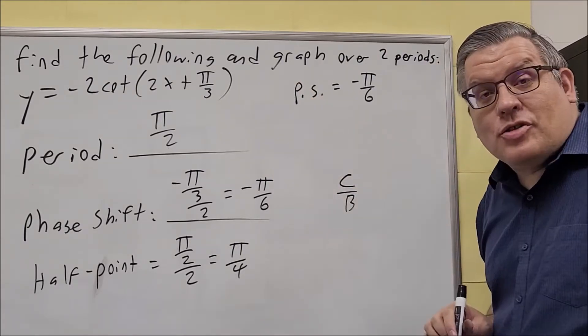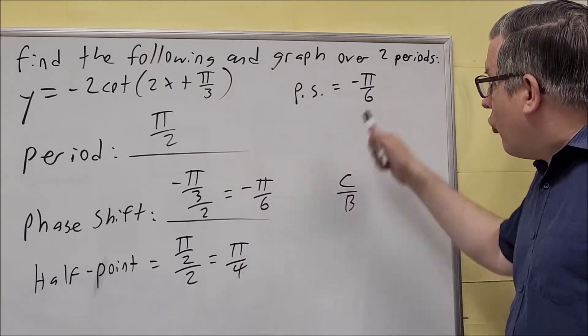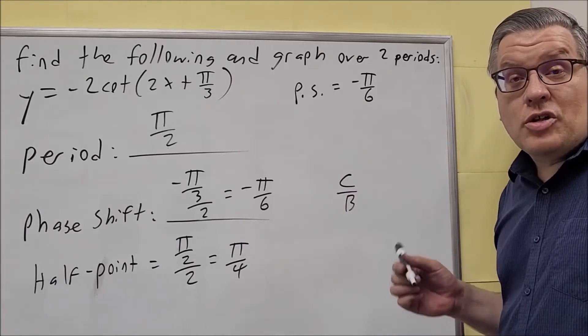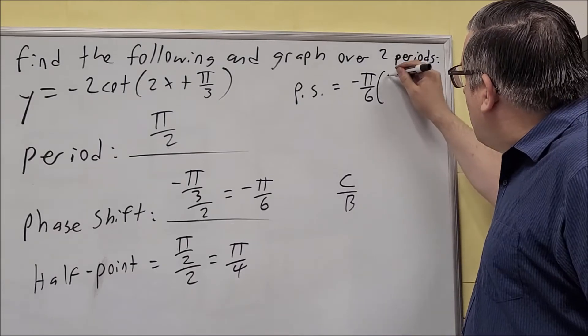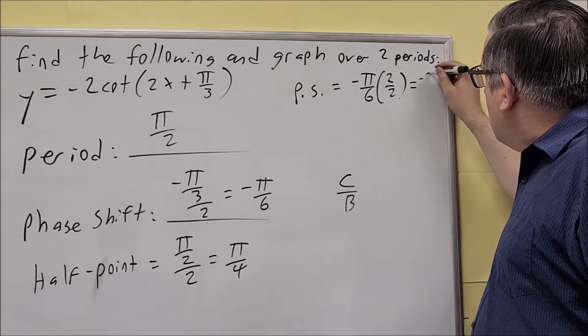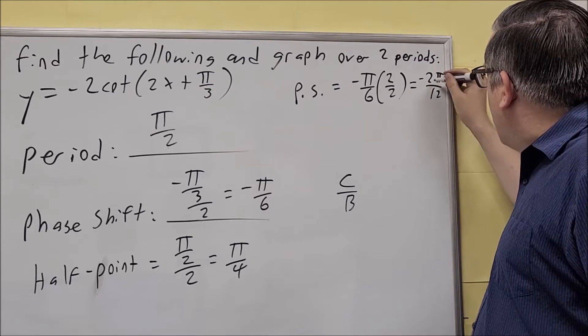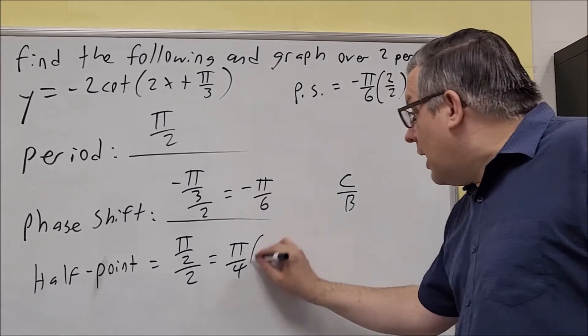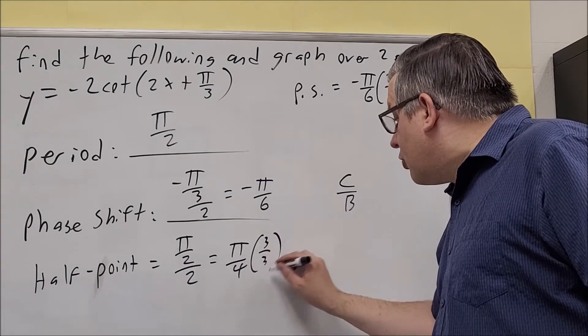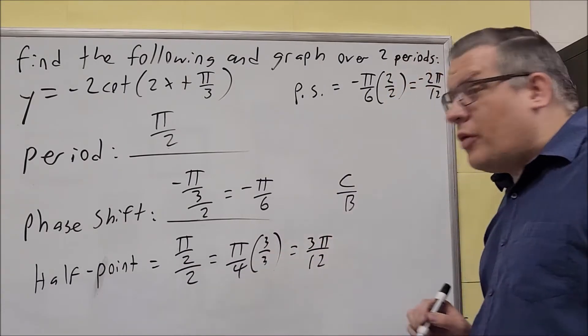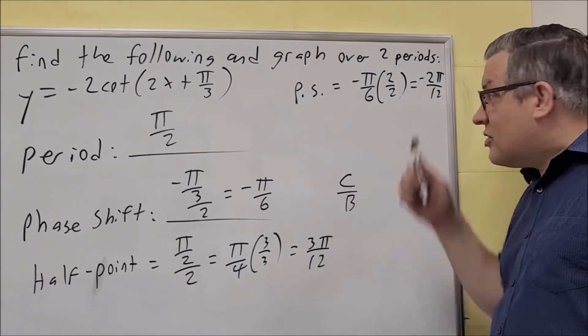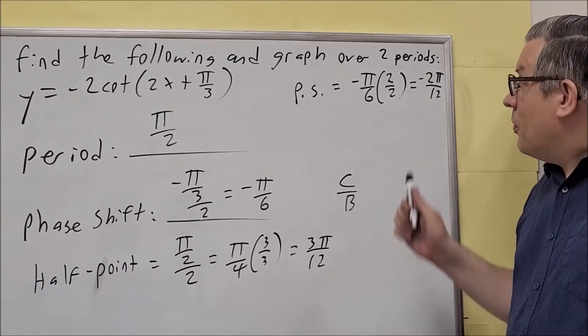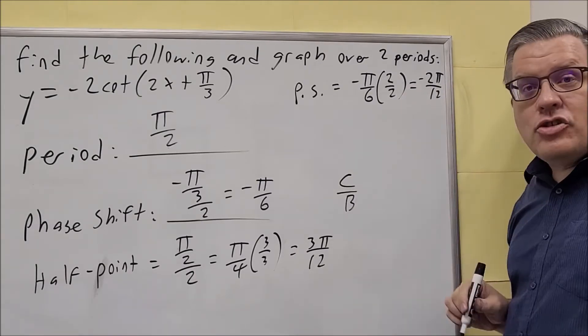It'll automatically have the common denominators. If you look at 4 and 6, the smallest number that both of those will go into evenly is going to be 12. So for this one, I'm going to multiply this by 2 over 2 and get negative 2π over 12 as the phase shift. The half point here, I'm going to multiply top and bottom by 3 over 3 to get 3π over 12. Now I have both of these have the same denominator. It's going to be easier to add these together now. We're going to start with our phase shift, negative 2π over 12.